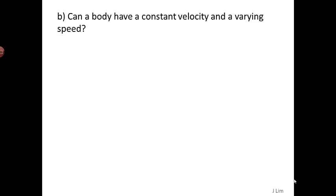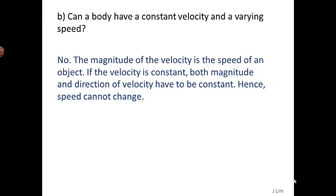Can a body have a constant velocity and a varying speed? No. The magnitude of the velocity is the speed of an object. If the velocity is constant, both magnitude and direction of velocity have to be constant, hence speed cannot change.